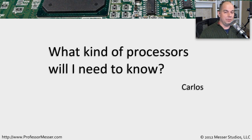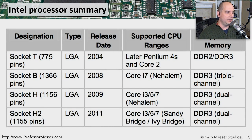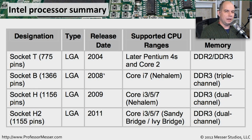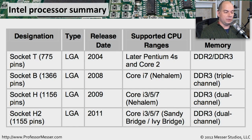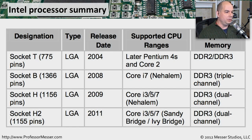Fortunately, in the 800 series exam, CompTIA now tells you exactly what you need to know. For Intel processors, the exam requirements list the sockets on the left side — Socket T, Socket B, Socket H, and Socket H2. That's it — only four Intel sockets. That's one of the real benefits of the 800 series exam: you know exactly what they're asking of you.